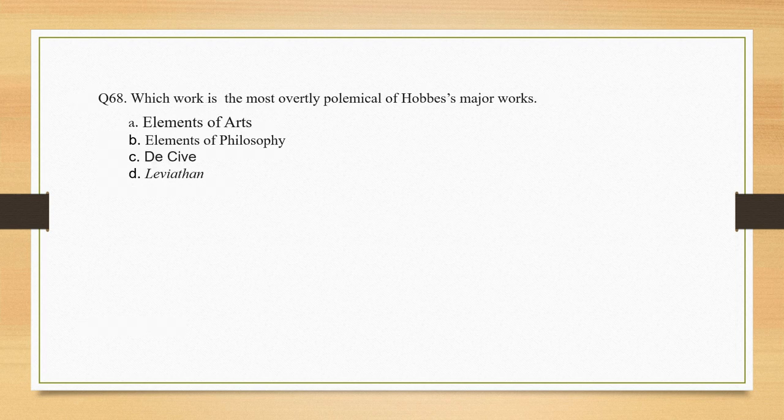Which work is the most overtly polemical of Hobbes' major works? Options: elements of arts; elements of philosophy; De Cive; Leviathan. The correct option is option D: Leviathan.